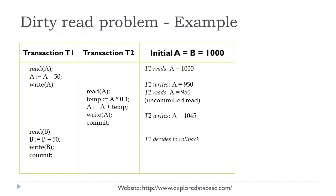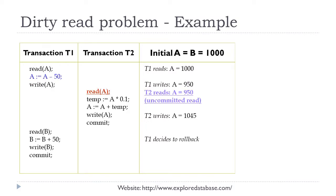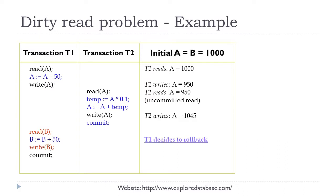Let us discuss the dirty read problem with an example. Transactions T1 and T2 have data items A and B with initial value 1000. T1 starts first, reads A as 1000, performs some operation, and writes a new value of A as 950. After this, T2 starts and reads A as 950 — the value produced by the uncommitted T1. T2 performs some operation, produces a new value of A as 1045, and commits. Now T1 executes the rest of its instructions but decides to roll back, meaning T1 must return to the old consistent state where A and B equal 1000.